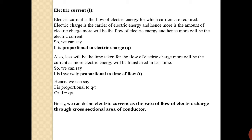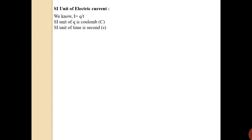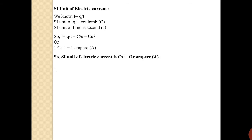Now moving to the SI unit of electric current. In physics, the SI unit of any physical quantity is determined using its formula. Since the formula for electric current is I = Q/T, and the SI unit of charge is coulomb and the SI unit of time is second, dividing these gives coulomb per second. One coulomb per second is equal to one ampere. So ampere and coulomb per second are the same thing, and in general we use capital A, or ampere, for the SI unit of electric current.